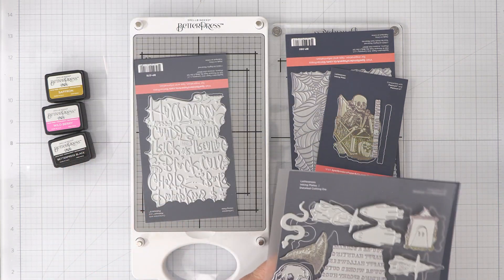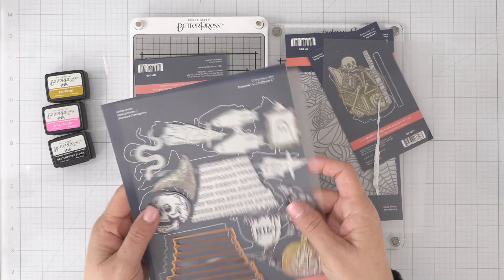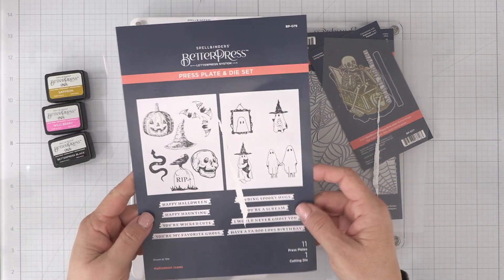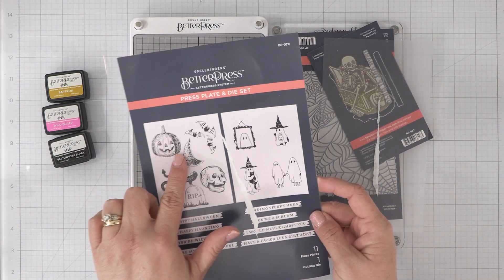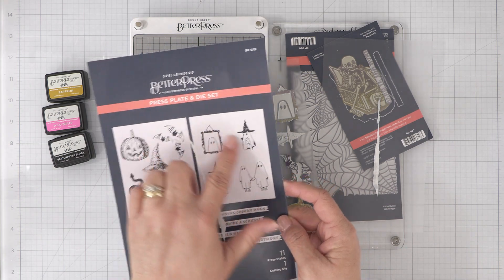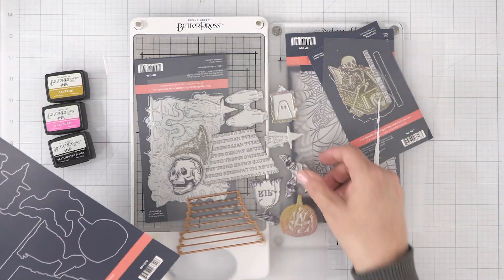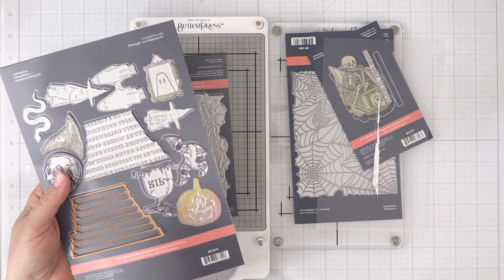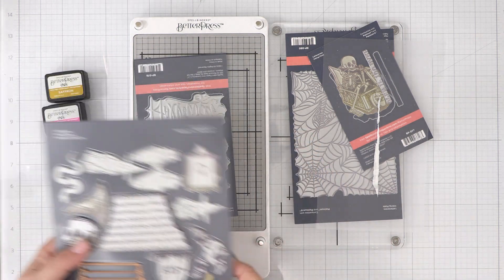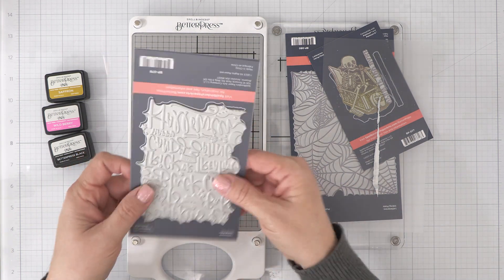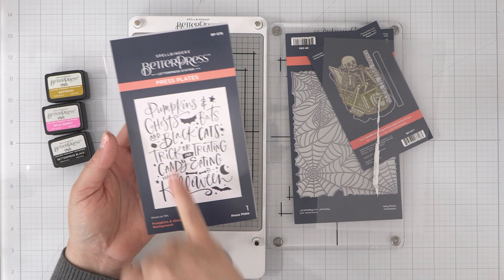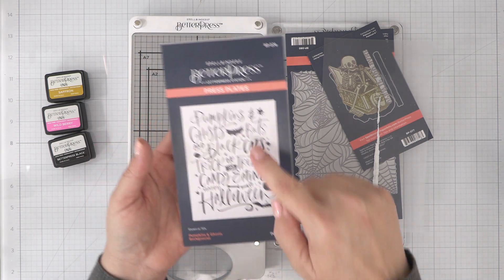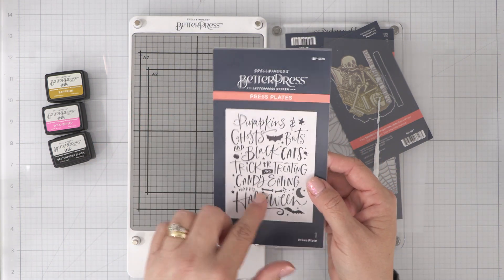So the first thing I'm sharing is the Halloween icons set and this set comes with 10 icons, 8 sentiments, and 1 die to cut those sentiments out. So this is a great set to have if you're looking just to pick up one to try it out. Also here we have another one that I love. This one is called Pumpkins and Ghosts and it's large enough to cover an A2 card front and I do have samples with this as well.